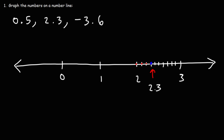While we have this number line, let's say we want to plot 2.8. All we need to do is continue counting towards 2.8: 2.4, 2.5, 2.6, 2.7, 2.8. So that's how we can plot a decimal number on a number line.